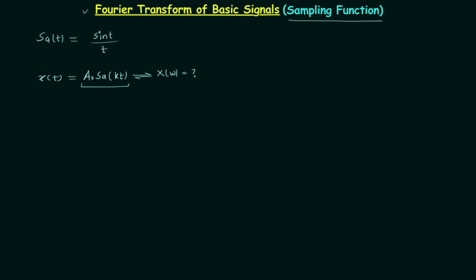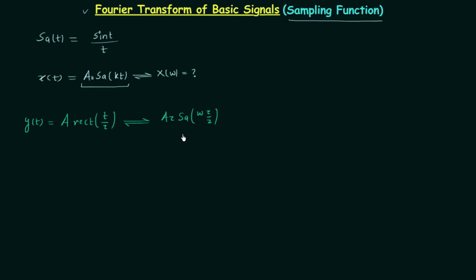We know the Fourier transform of a·rect(t/τ) is equal to a·τ multiplied by sampling(ω·τ/2). So we have the sampling function appearing in the Fourier transform of the rectangular function. Let's call the rectangular function y(t). Now we will use the duality property — we want the sampling function in the time domain, so we will replace ω by t.